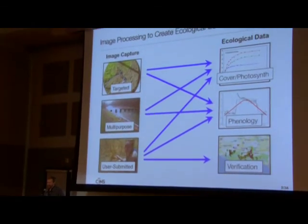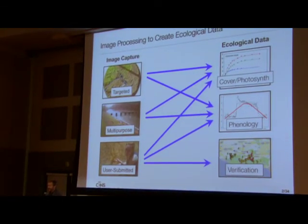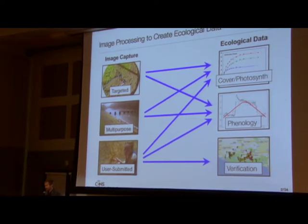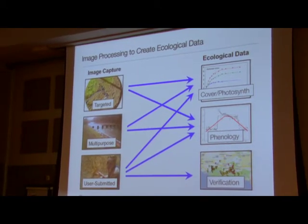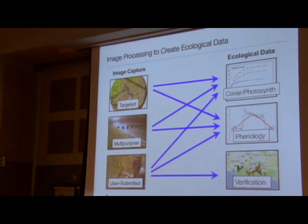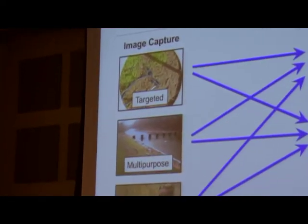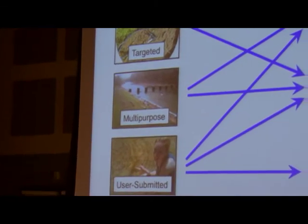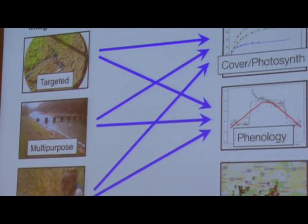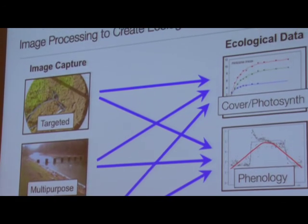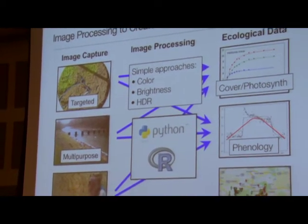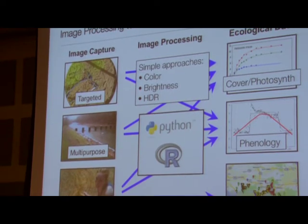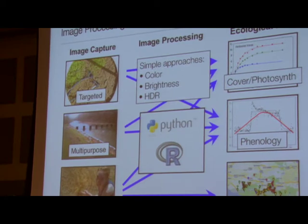Cameras are everywhere. I have one in my pocket right now, and I bet most of you do as well. It's really cheap and easy to take pictures and post them on the web. Everybody's doing it, and ecologists are not much different — we're posting lots and lots of pictures of plants, blooming events, and animals. But most pictures still require a human being to interpret and get any quantitative data out of them. This is what's been motivating us: to use some of the brain power at SEND to come up with image processing scripts to extract quantitative information out of images that ecologists are collecting.